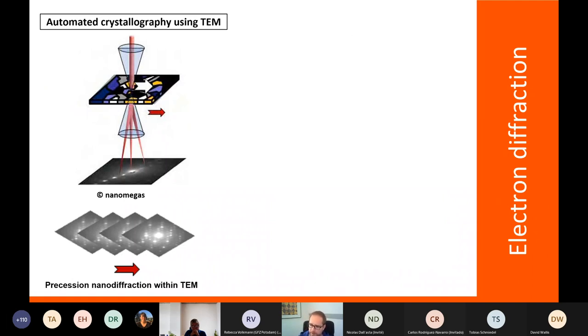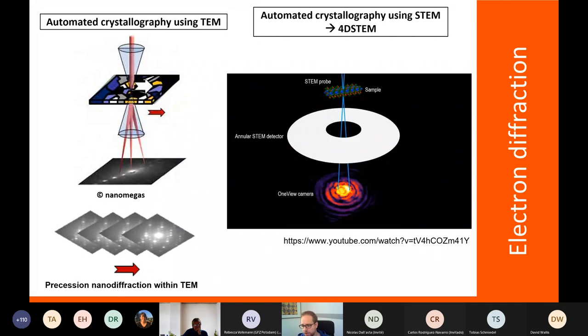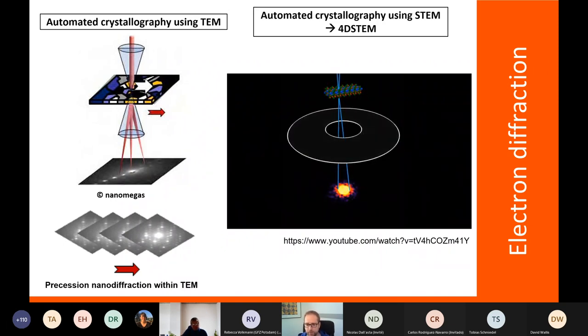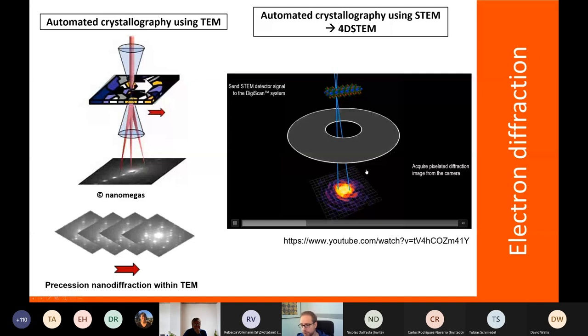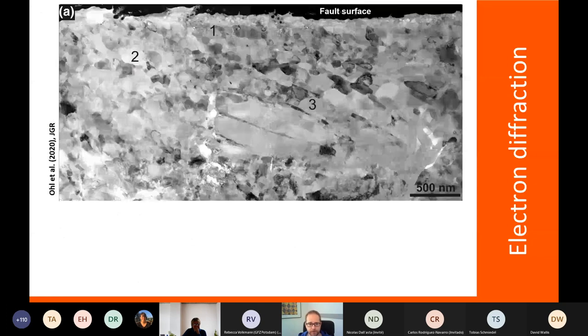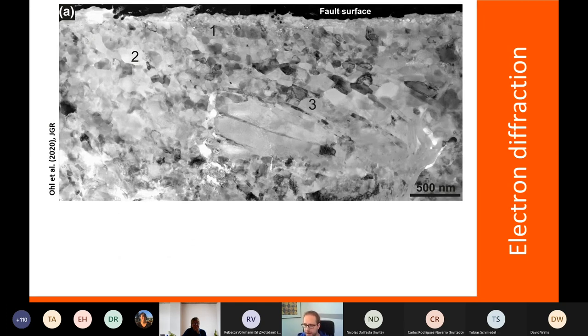The other more advanced technique in electron diffraction—we've learned a lot about diffraction and you know now what these diffraction patterns look like—but we can also scan across the sample to basically generate nanoscale crystallographic orientation maps. This can be done in the TEM or actually in a scanning transmission electron microscope, which is called 4D STEM, where we scan across the sample and instead of collecting x-rays, we collect diffraction patterns. These diffraction patterns we can interpret similar to Kikuchi diffraction patterns from EBSD, as David Wallace has shown earlier, and then we can make a map out of this.